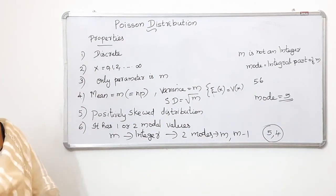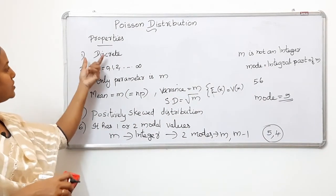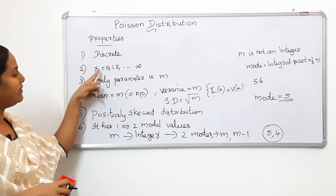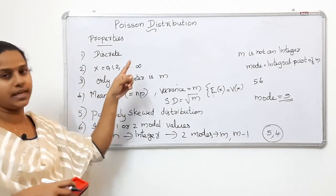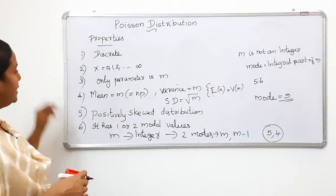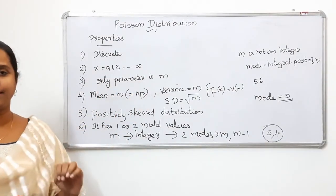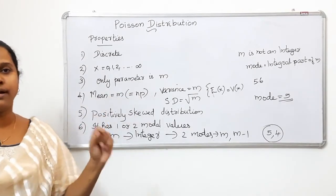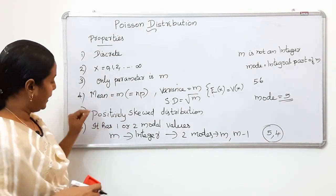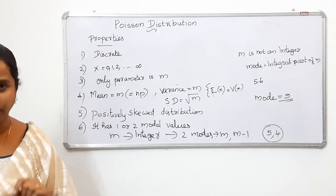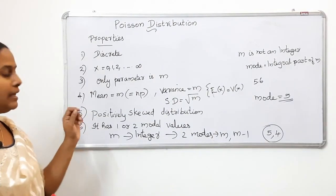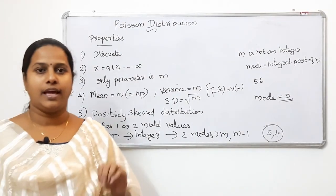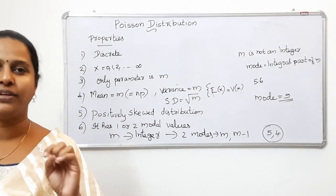There are six properties of the Poisson distribution. It is a discrete probability distribution. The variable x takes values 0, 1, 2, 3, etc., up to infinity. The parameter is m, meaning the mean and variance are both equal to m. The distribution is positively skewed. And it has one or two modal values depending on whether m is an integer. Thank you.